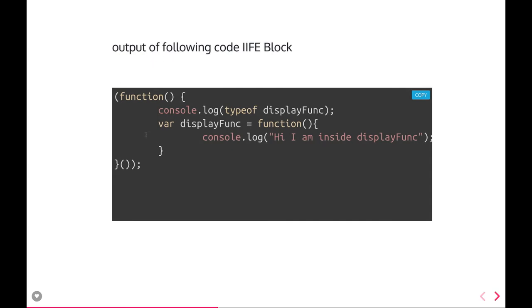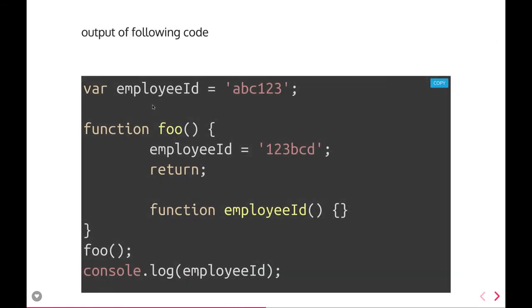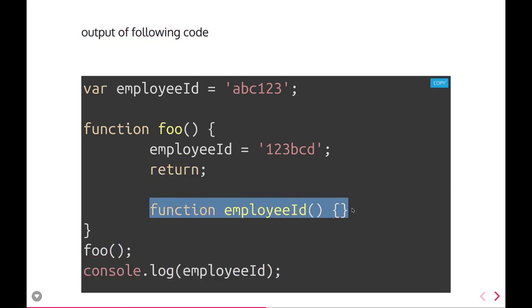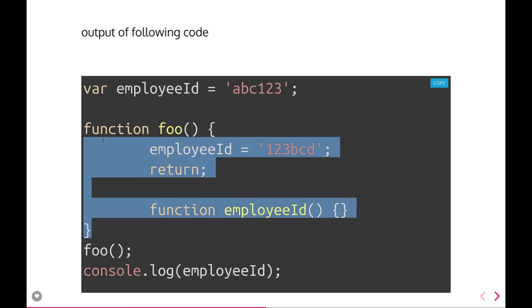Another topic is the IIFE pattern. In the display function, 'this' is undefined because the display function is not defined in that scope. An IIFE block prevents function hoisting and variable hoisting, and it prevents variables from leaking into the global scope outside that IIFE block. Also, looking at this code — employee ID is set and you are returning it, but there is unreachable code after the return. The employee ID value will be 'abc123' because it picks from the global scope, which is available outside the function scope.